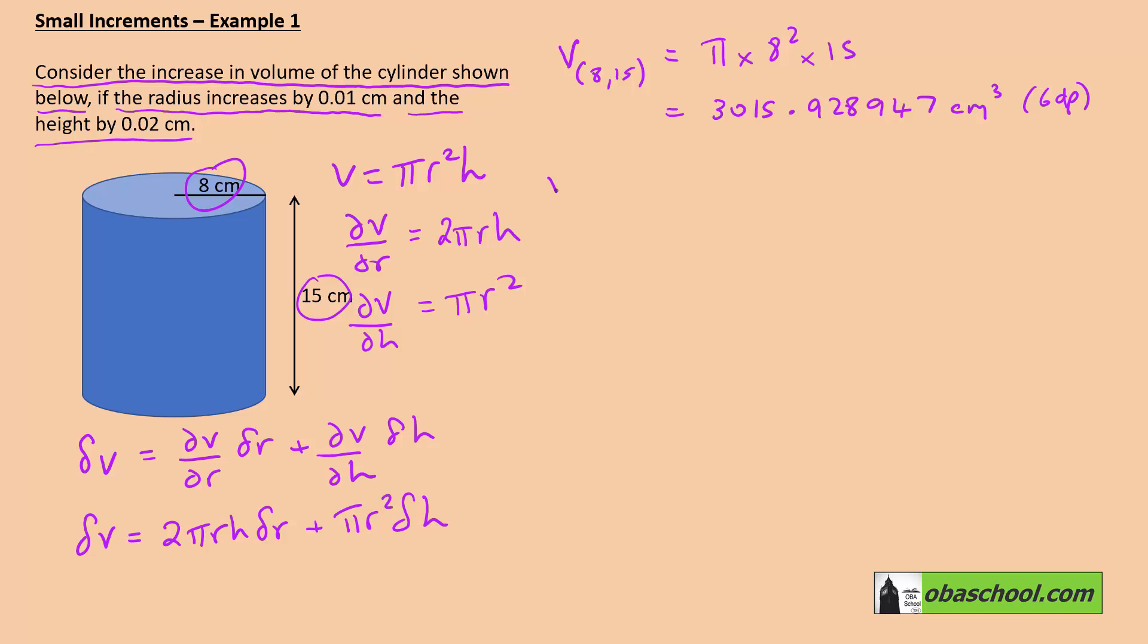What about the true increased volume, which is 8.01 and 15.02? So that's going to be pi times 8.01 squared times 15.02. I've also calculated that. It's 3027.50478. And that was all my calculator gave me, unfortunately. It's to a different number of decimal places, but it doesn't matter. We'll get the point.